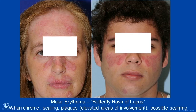With chronic disease, these change. Rather than being flat, they become raised, and you can get plaque-like infiltration. At this point, these types of lesions can become scarring.